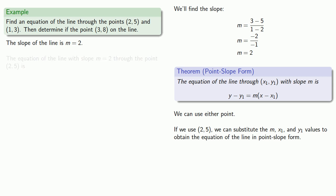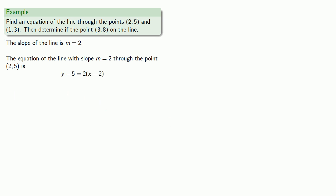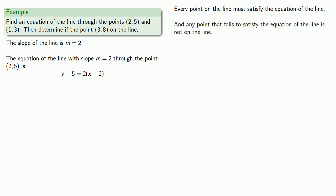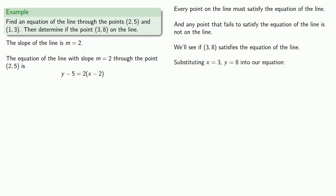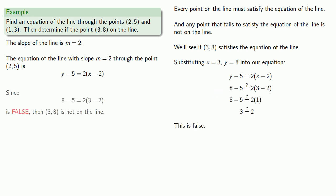We write the equation of the line with slope m equals 2 through the point (2, 5): y minus 5 equals 2 times x minus 2. To determine if (3, 8) is on the line, we substitute x equals 3, y equals 8 into our equation. This statement is false, so (3, 8) is not on the line.